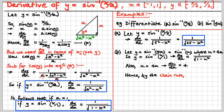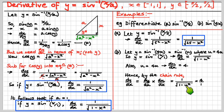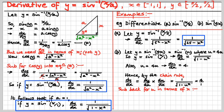So y is the angle whose sine is u over 1. Therefore dy/du is 1 over the square root of 1 minus u squared, and du/dx is 4. By the chain rule, dy/dx is dy/du times du/dx. It's 1 over the square root of 1 minus u squared times 4. We plug u equals 4x back in and get our result.